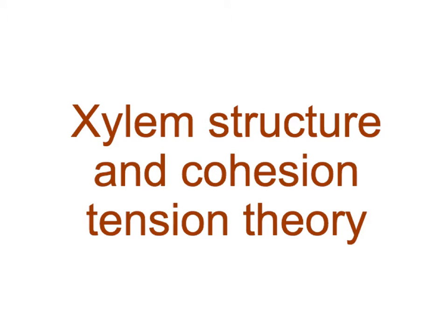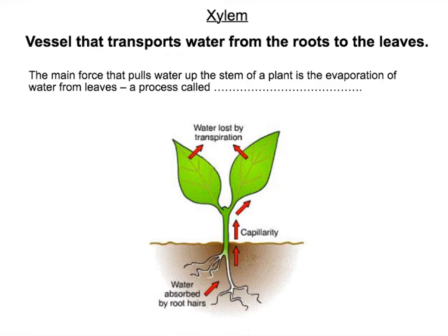This video is going through the structure of a xylem, how it's adapted, and how water moves through the xylem from the roots to the leaves using the cohesion-tension theory. Very basically, water is absorbed by the roots in the plant, it then travels through the xylem found in the root, through the xylem found in the stem, and through the xylem found in the leaves.